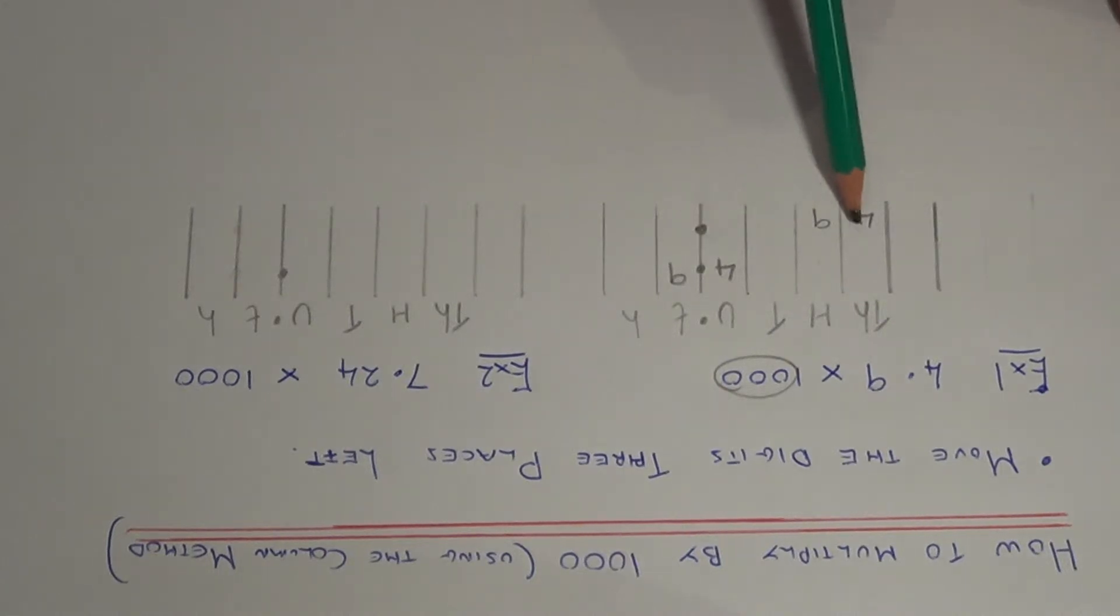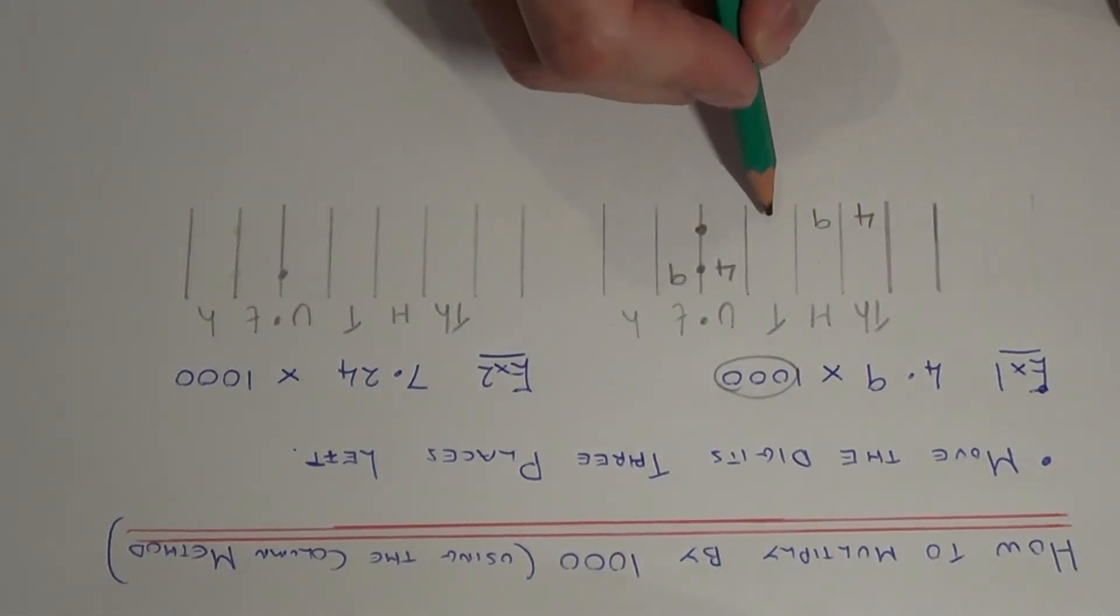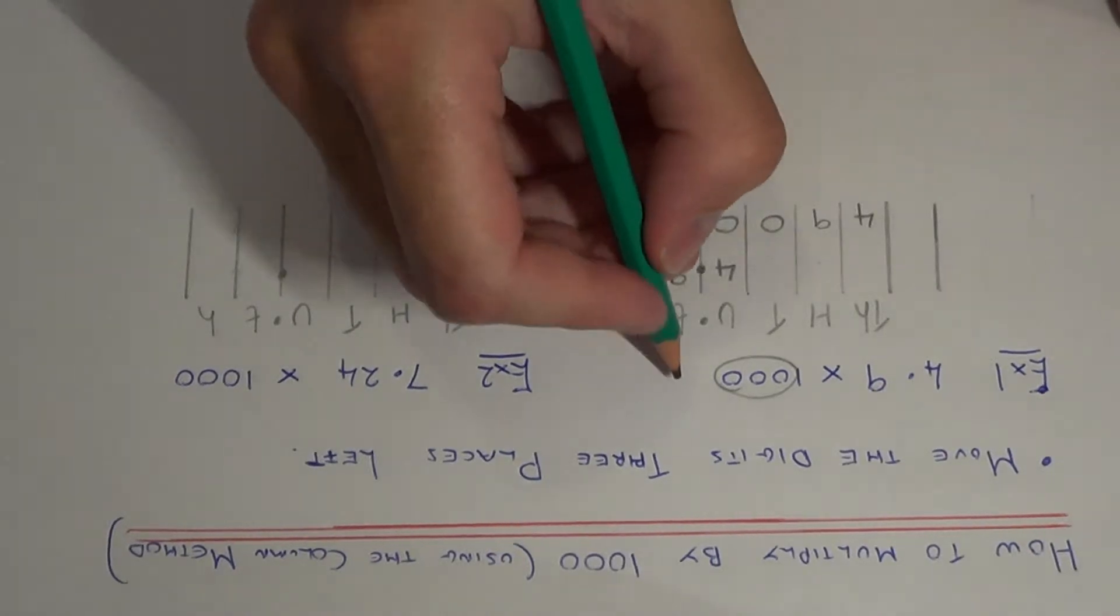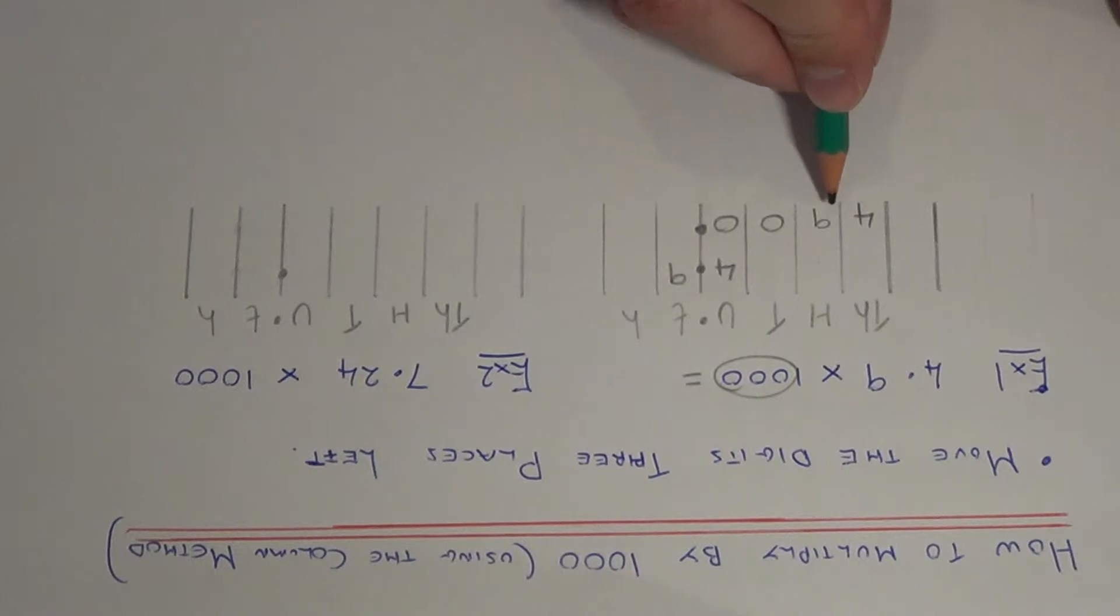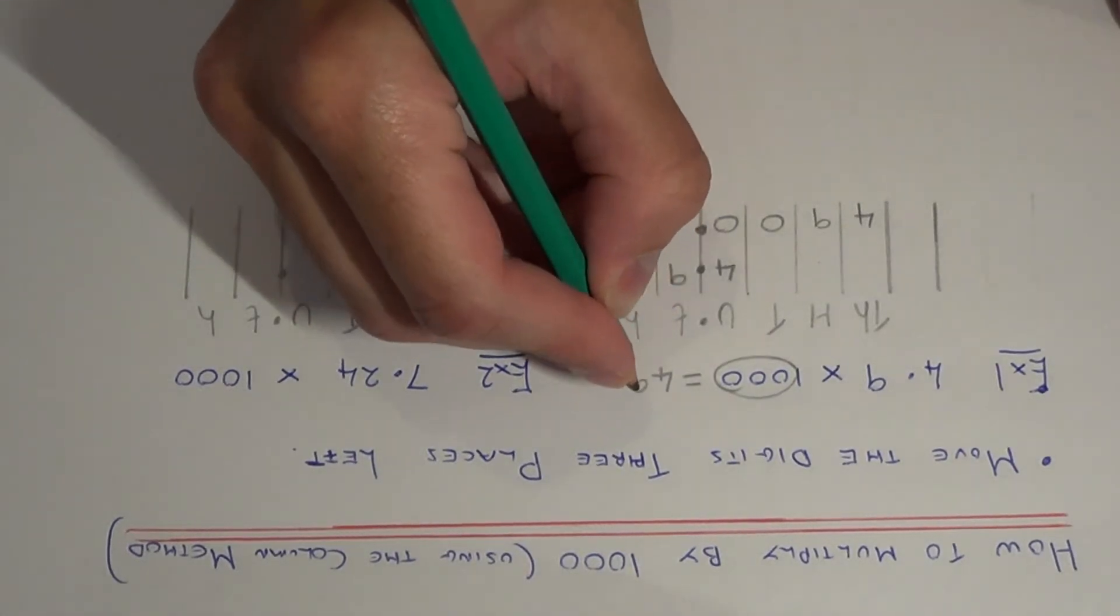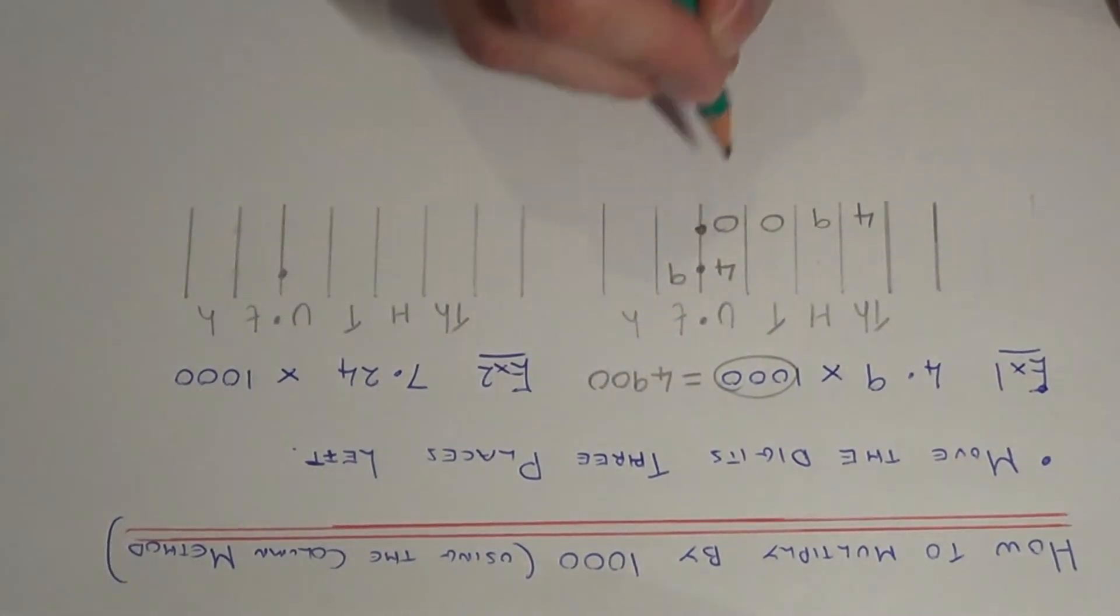Right, if you have any gaps between the numbers and the decimal point, you need to fill those columns in with zeros. So our final answer is 4,900. And since there's nothing after the decimal point, there's no need to put it in. So let's have a look at example two.